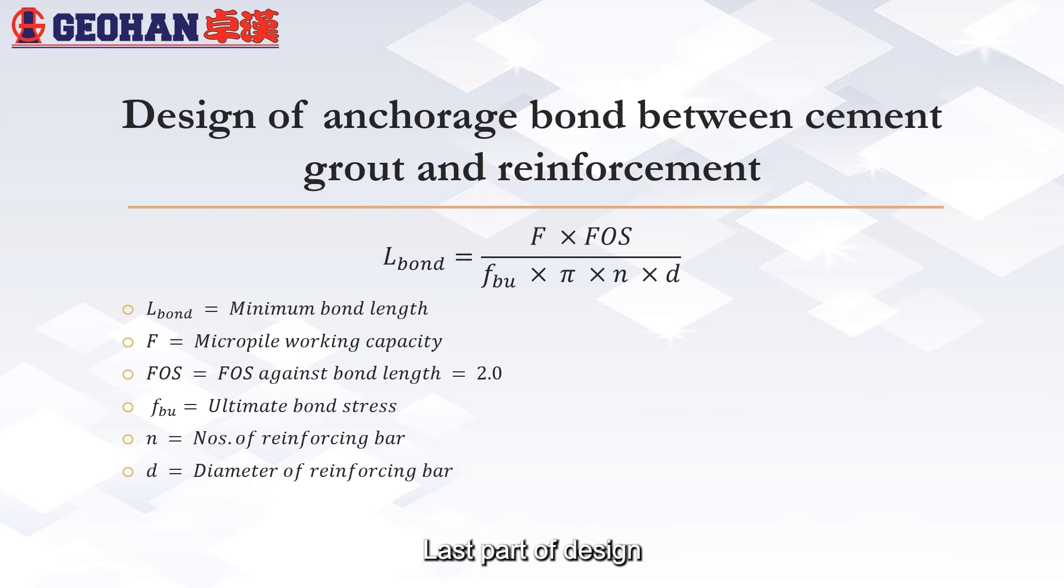Last part of design is about bond between cement grout and reinforcement. This is to ensure the loading is well transferred from steel to cement grout and cement grout to steel. Minimum bond length is equal to product of working capacity and factor of safety against bond length divided by the product of ultimate bond stress, number of reinforcing bar and diameter of reinforcing bar.